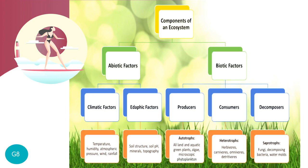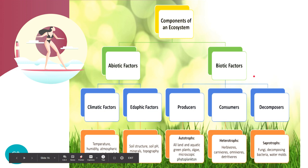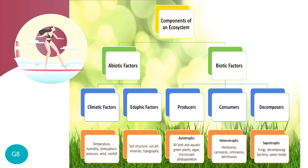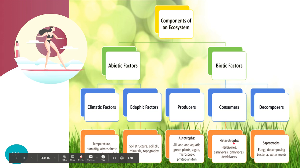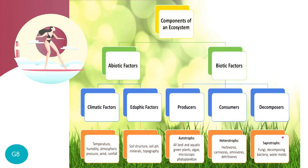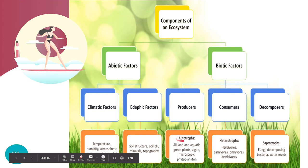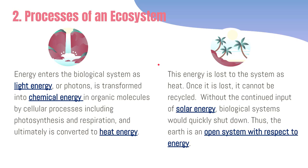Biotic factors are further divided by their ecological niche or the role they play. You have producers, which are also autotrophs — these are photosynthetic plants, algae, and phytoplankton. Consumers are your heterotrophs — herbivores, carnivores, omnivores, and detritivores. Then there are decomposers or saprotrophs — fungi, decomposing bacteria, and water molds. Note: 'auto' means self, 'hetero' means others, and 'sapro' means they feed on decaying matter.